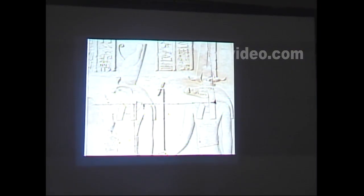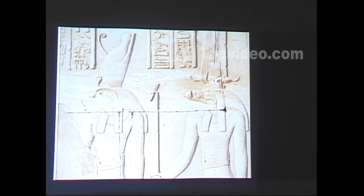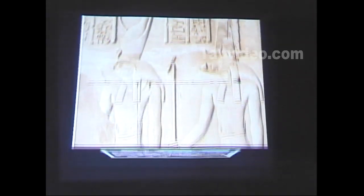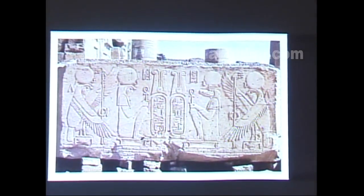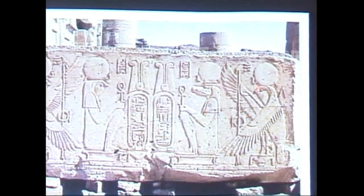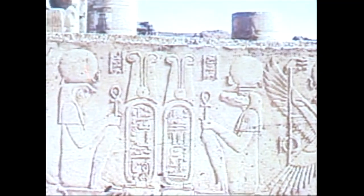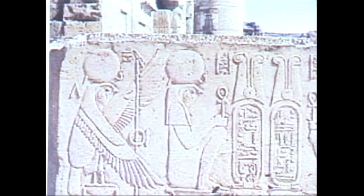We have both deities together — Heru and the god Sebek — holding the Was scepter, the scepter of power. This piece is showing Sebek on the right-hand side and Heru on the other side, being protected by the god Ra. That's how we make the distinction between Heru and Ra — because of the solar disk with the cobra in front. So these deities are Ra-Horakti and Ra-Sebek.